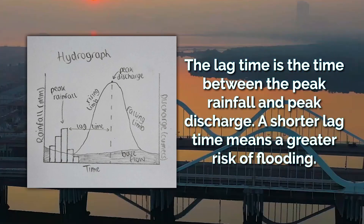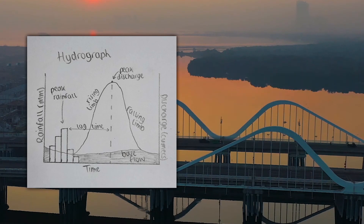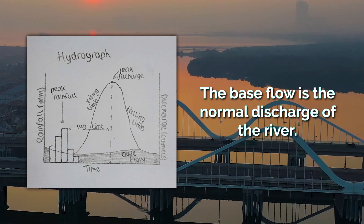A shorter lag time means a greater risk of flooding. The rising limb is where the discharge is increasing, and the falling limb is where it is decreasing. The base flow is the normal discharge of the river.